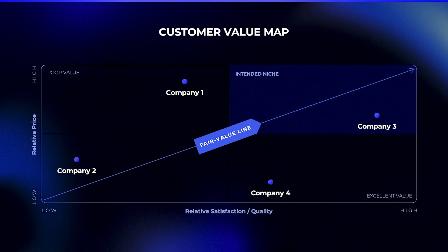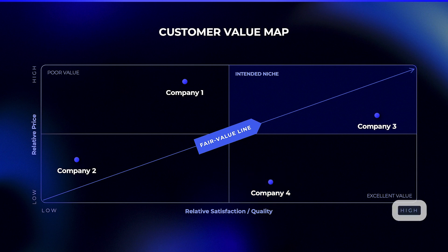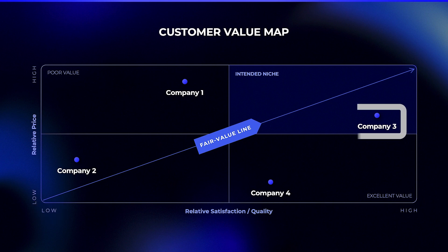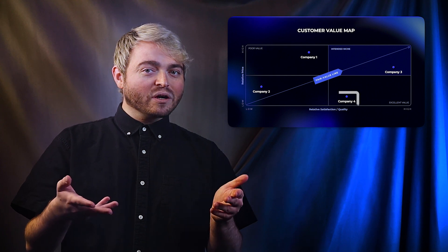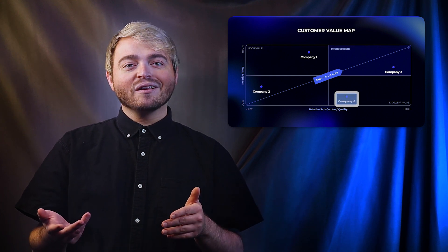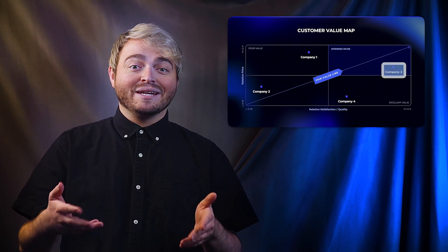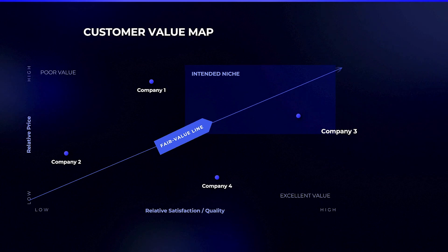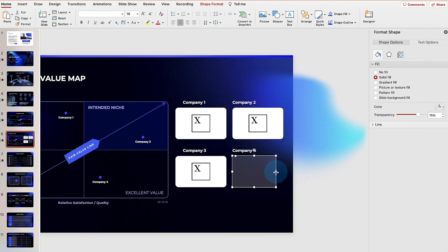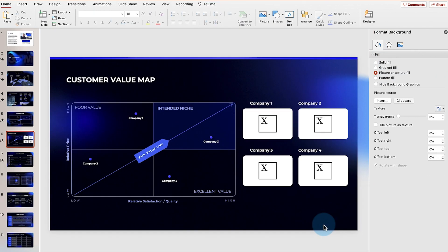In this scenario, company four wins the hearts of the public for the relatively high satisfaction it delivers for its relatively low price. Company three hovers around your intended niche, so even though company four is doing quite well, company three would be a more immediate threat. For those who are feeling extra fancy, this layout allows you to add logos or images of the competitors that you seek to dethrone.